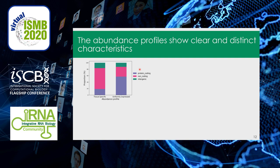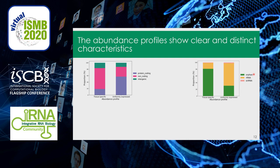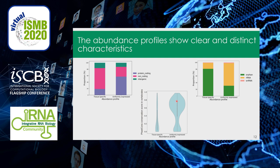I then investigated whether these two abundance profiles had distinct characteristics. First, regarding host gene biotype: tissue-specific snoRNAs are mostly encoded in non-coding host genes, whereas uniformly expressed snoRNAs are mostly encoded in protein-coding host genes. Regarding their targets: uniformly expressed snoRNAs mostly target ribosomal RNA, so they are mostly canonical; tissue-specific snoRNAs are mostly orphan. Finally, uniformly expressed snoRNAs are highly conserved across vertebrates by FASCON conservation score, whereas tissue-specific snoRNAs are poorly conserved.